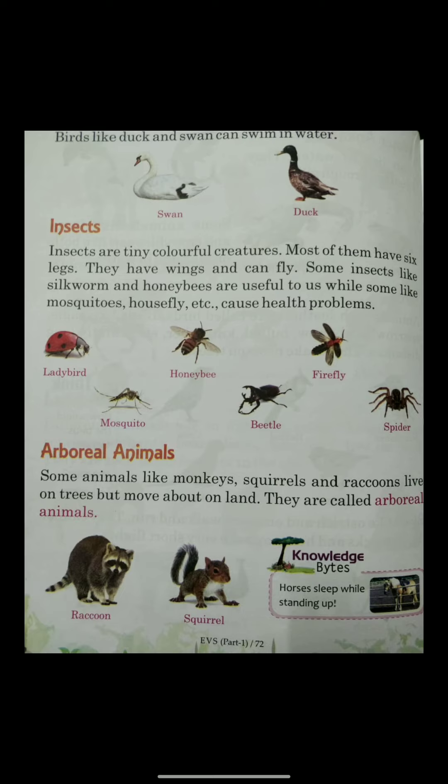Today we learned about the types of animals — land animals, birds, water animals, insects, and arboreal animals. Your homework is to read this chapter again very carefully. In the next class, I will ask you questions and we will read it again. Thank you so much, children. Bye bye, see you, take care.